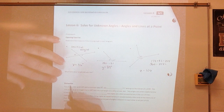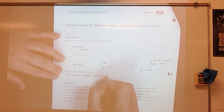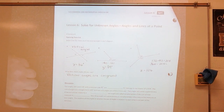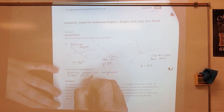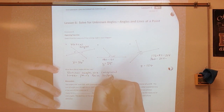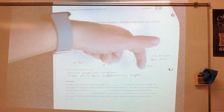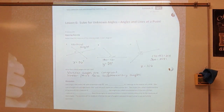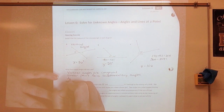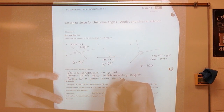What facts about angles did you use? We used vertical angles are congruent, meaning equal. We used linear pairs, which form a supplementary angle or a straight line — this is what we call linear pairs. And we looked at angles at a point because those three angles are angles at a point. They are at a point and it looks like a circle.